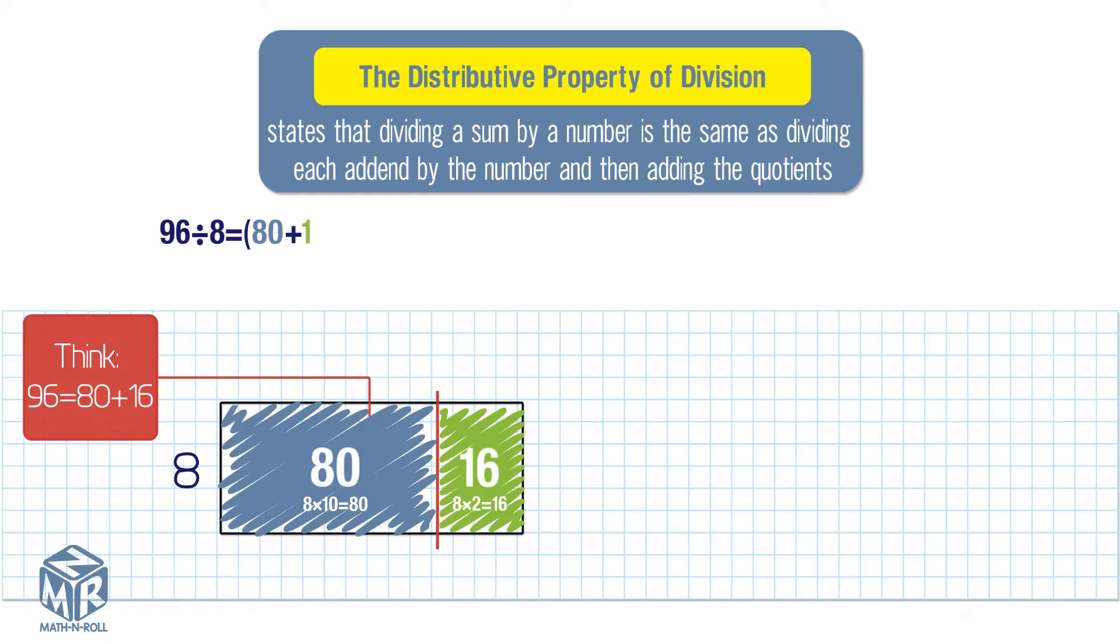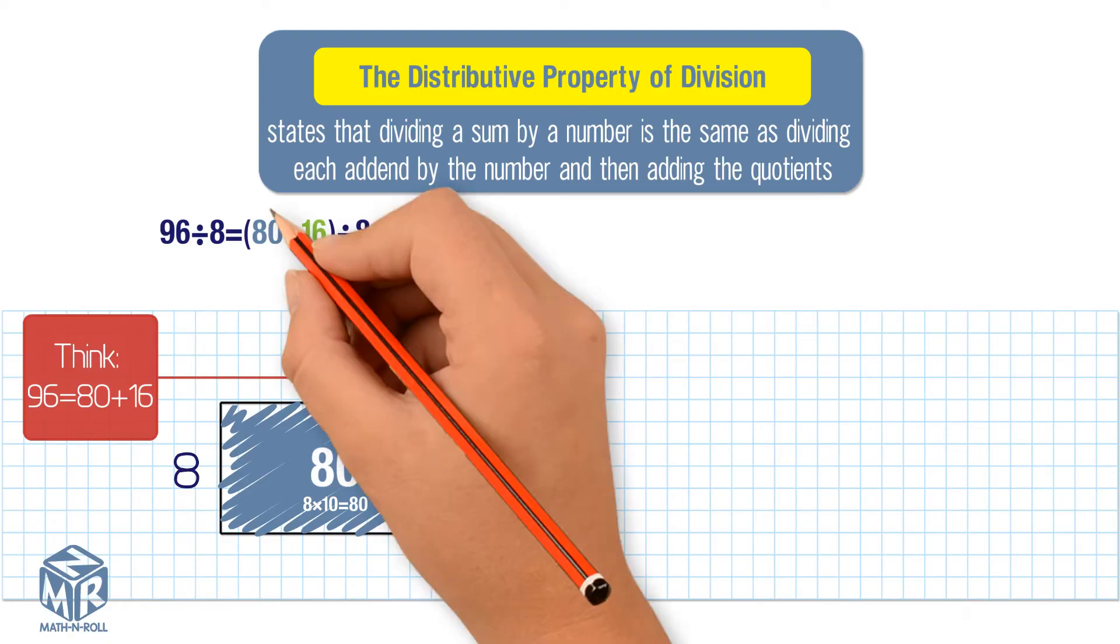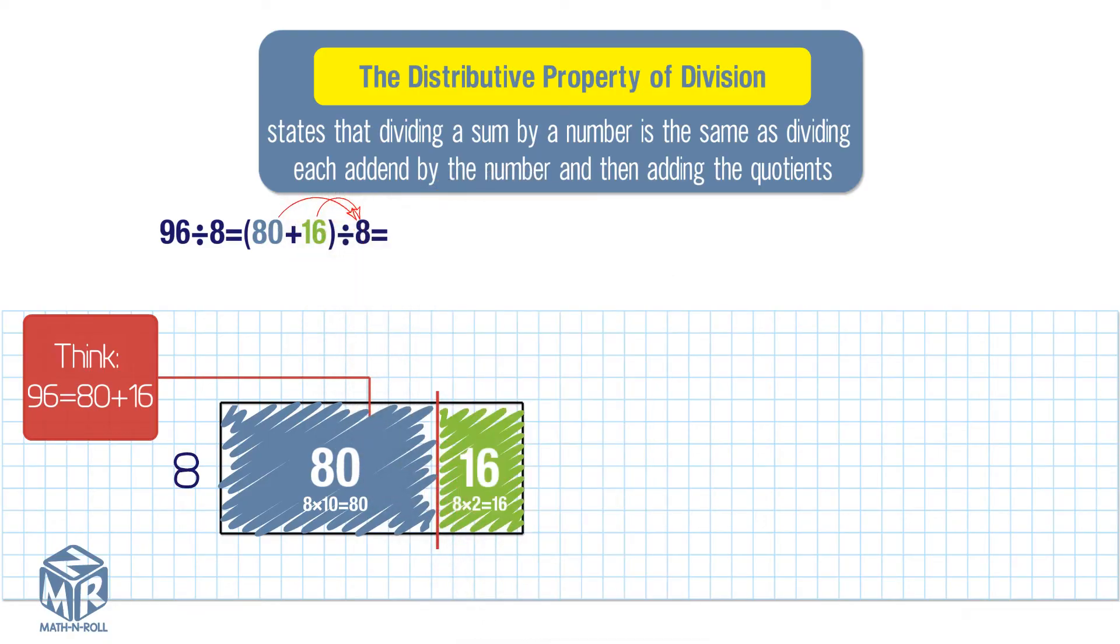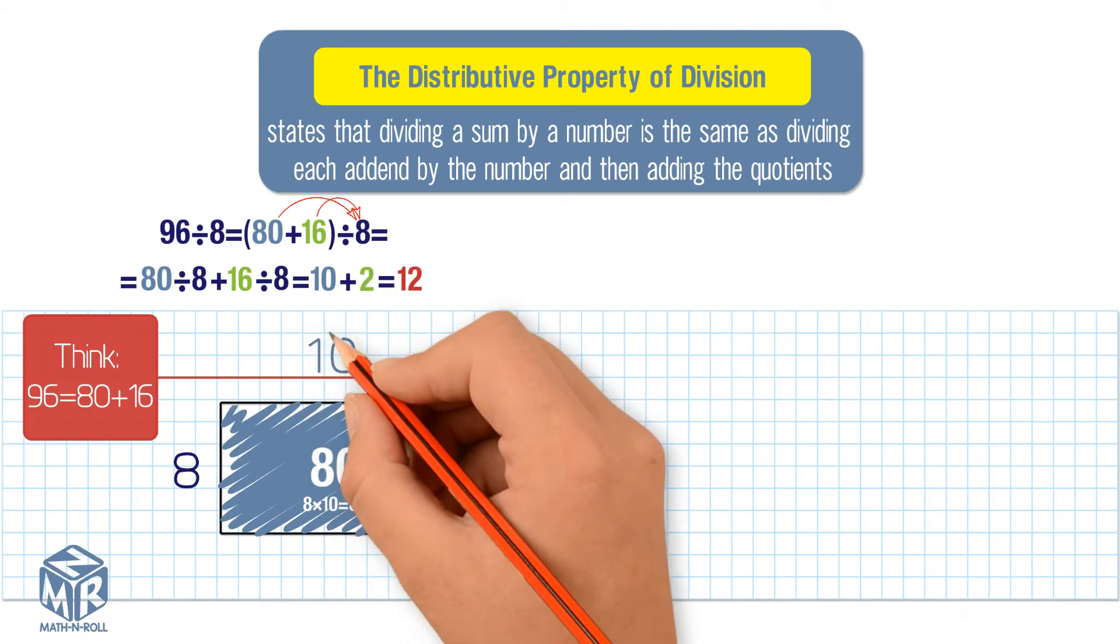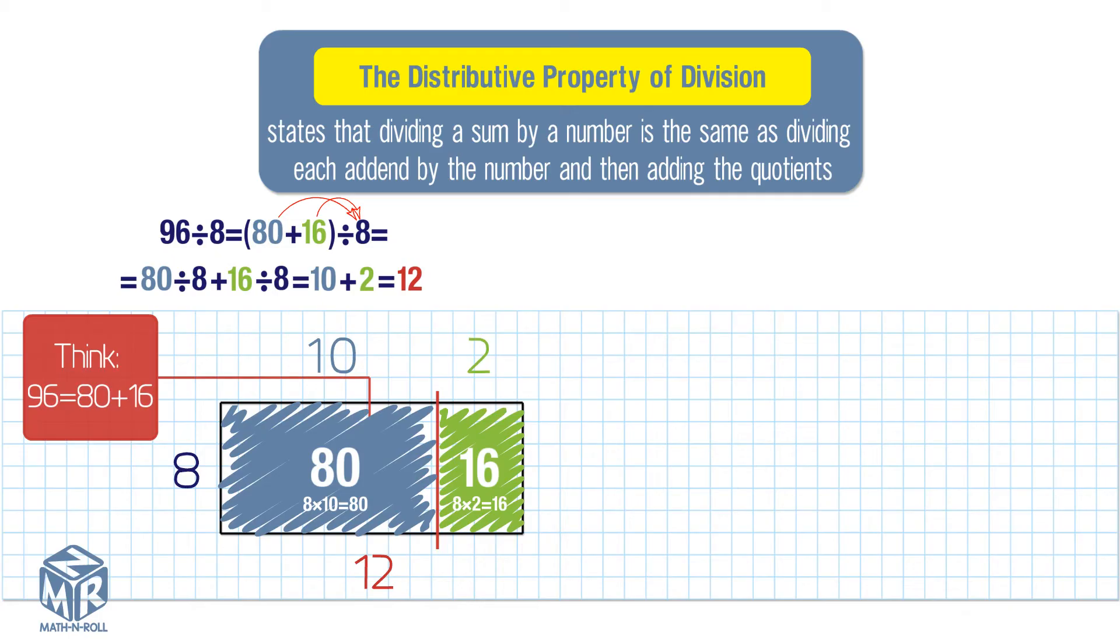Now use the distributive property to divide. We divide each addend by 8. 80 divided by 8 plus 16 divided by 8. Add the partial quotients. 10 plus 2 equals 12. So 96 divided by 8 equals 12.